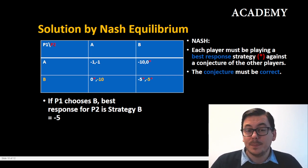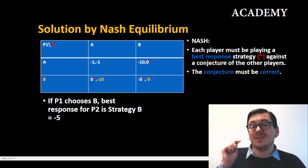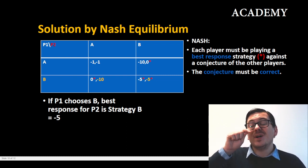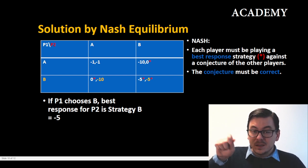If player one plays B, what is the best response that player two can do? Well again we are with strategy B because he can either get minus 10 from strategy A or minus five from strategy B, and minus five is better than minus 10. So we mark it by a star.